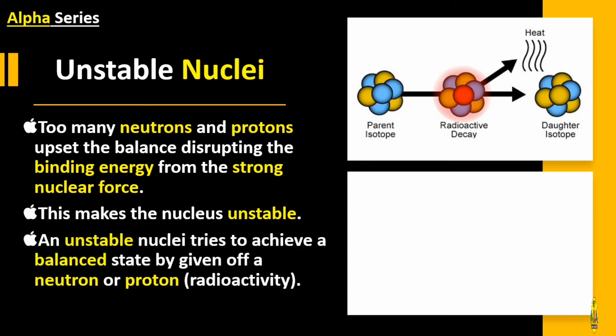An unstable nuclei tries to achieve a balanced state by giving off a neutron or proton. This process is known as radioactivity, and the action is known as radioactive decay.